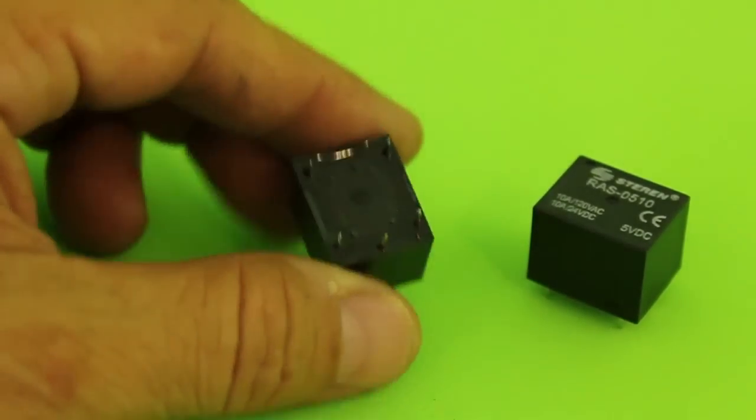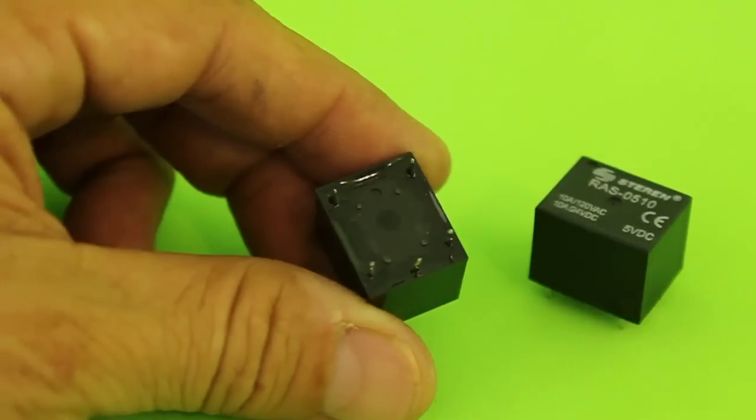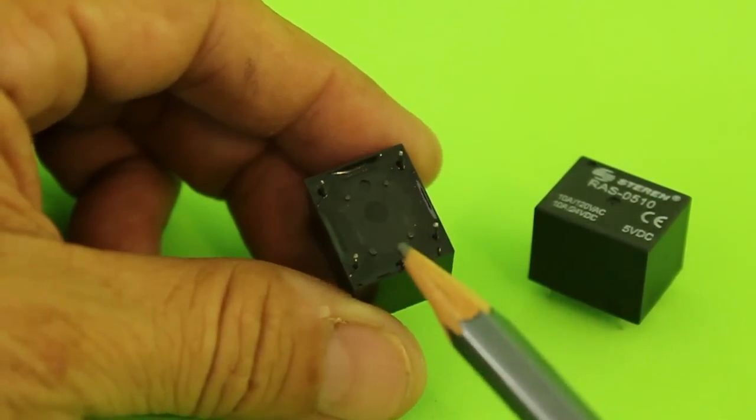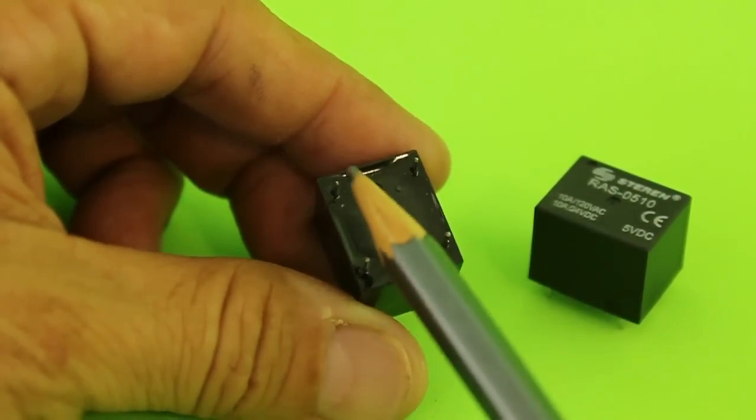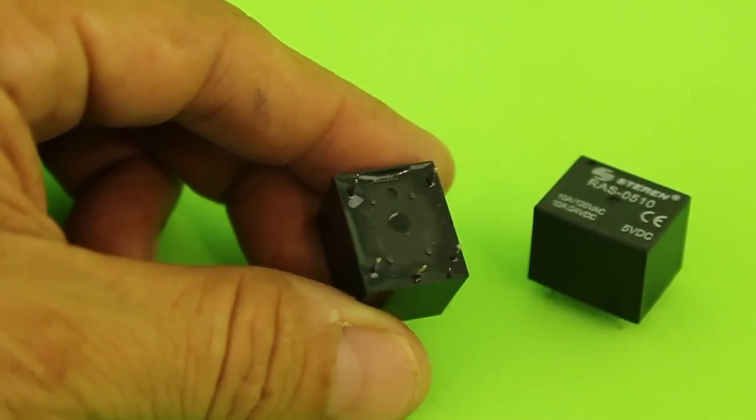These relays are the ones with five pins. Two of them are for the coil, one is the common contact, and we have a normally open contact and the normally closed one.